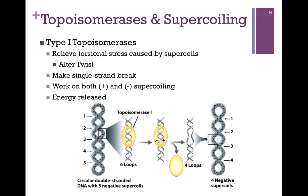If we need to introduce or relieve supercoiling, we need enzymes called topoisomerases — isomerases that change the topology of the DNA. Type 1 topoisomerases relieve the stress caused by supercoils by altering the twist. They make a single-strand break — an easy way to remember: Type 1, one-strand break. They can work on both positive and negative supercoiling, and energy is released; no ATP input is required.